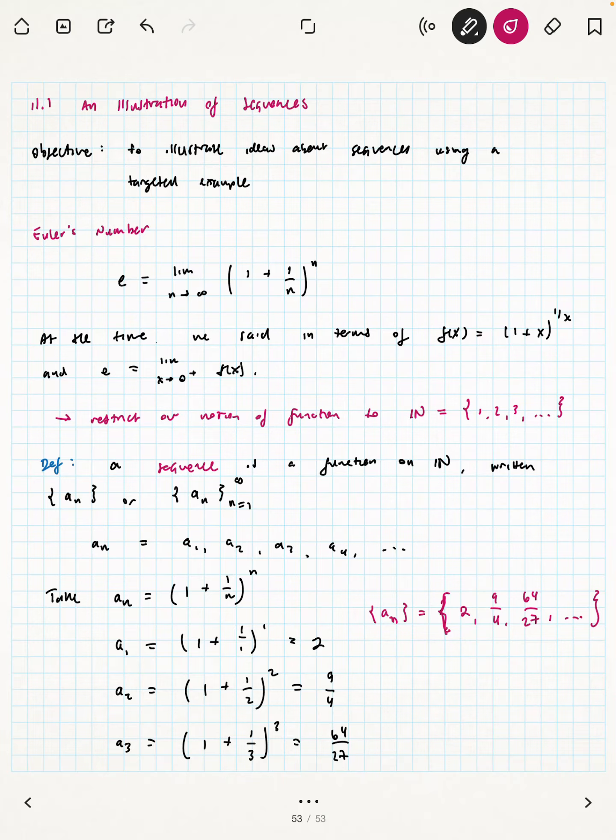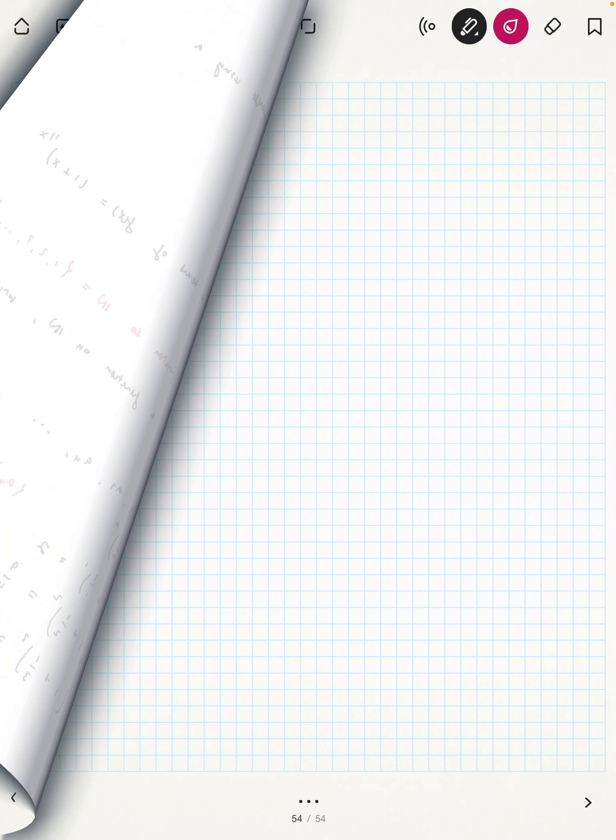Now, we've actually said the punchline already, which is that this sequence converges to a real number, and that number is Euler's number. So let's talk about that.